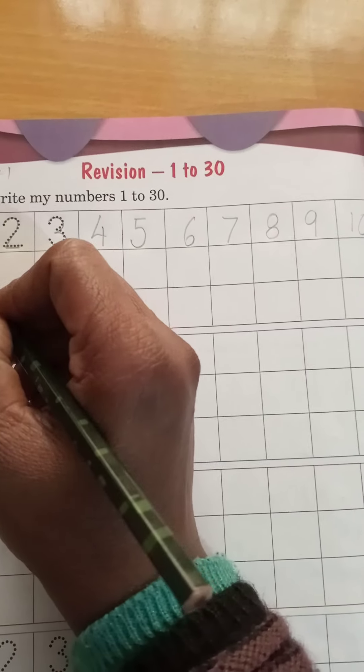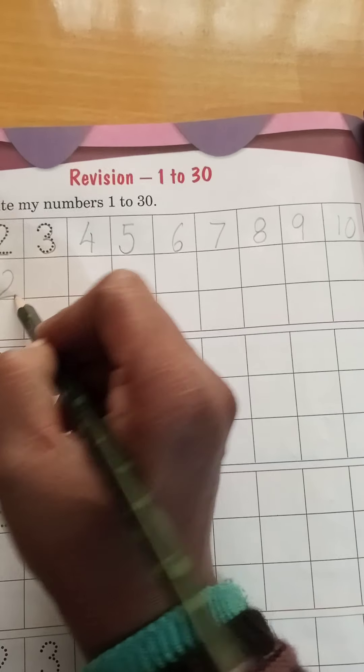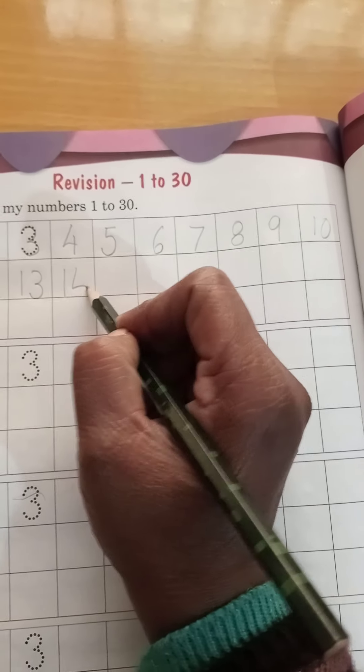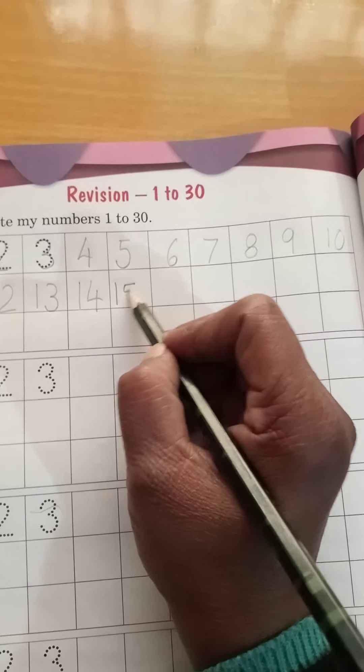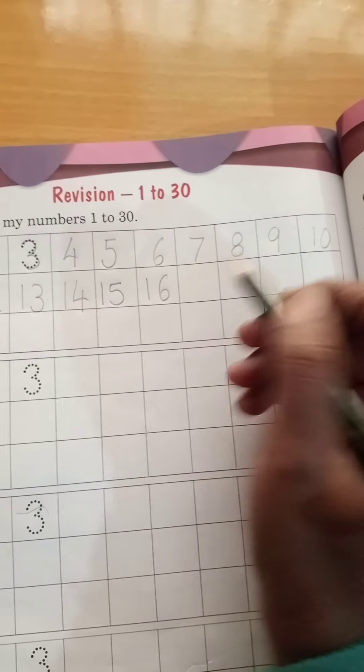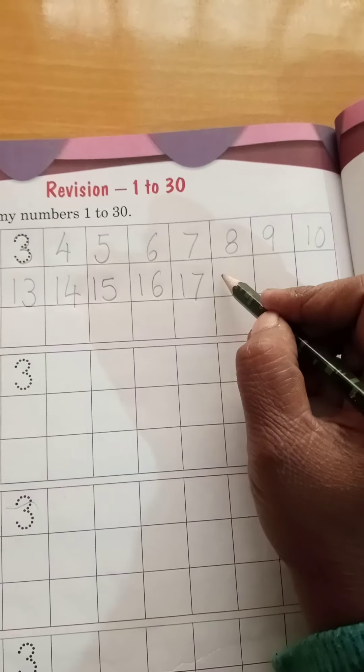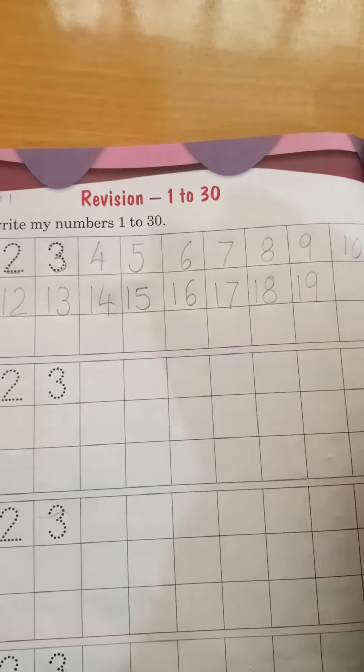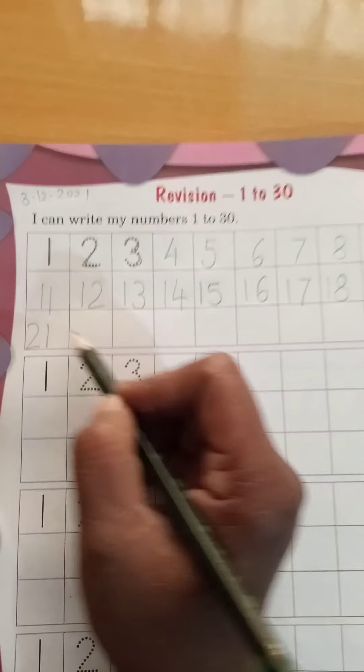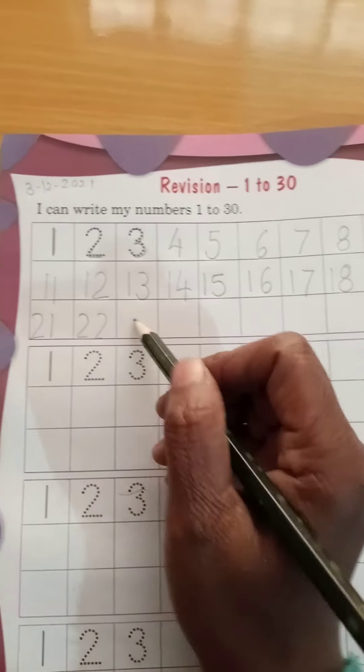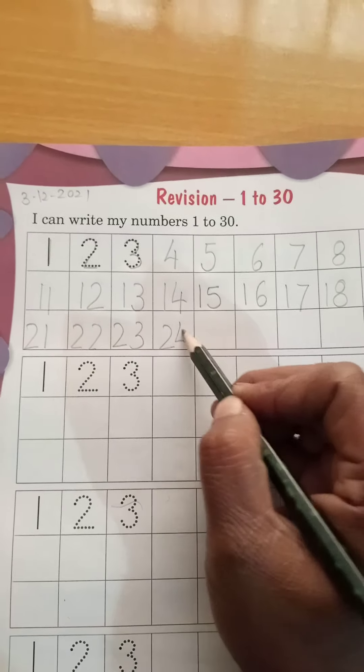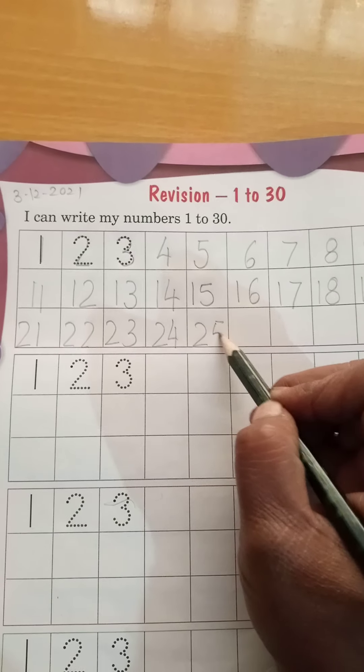11, 12, 13, 14, 15, 16, 17, 18, 19, 20, 21, 22, 23, 24, 25, 26, 27, 28, 29, 30.